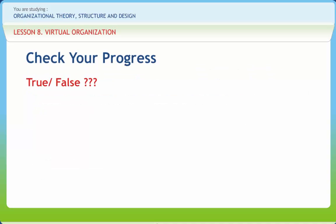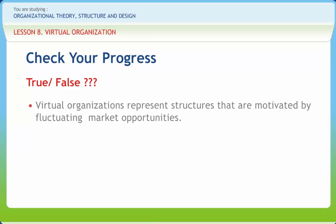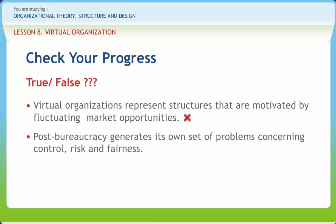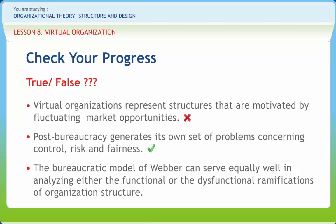Let's check if you have understood the various concepts discussed in this lesson. Virtual organizations represent structures that are motivated by fluctuating market opportunities — right or wrong? Wrong. Post-bureaucracy generates its own set of problems concerning control, risk and fairness — right or wrong? Right. The bureaucratic model of Weber can serve equally well in analyzing either the functional or the dysfunctional ramifications of organization structure — right or wrong? Right.